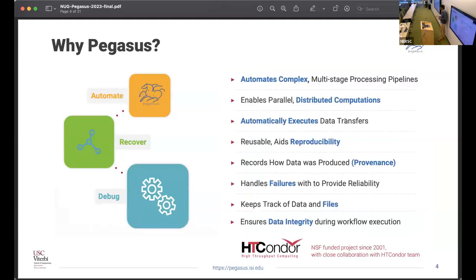Pegasus is a NSF-funded project since 2001, which is developed in close collaboration with the HT Condor team. It automates complex multi-stage processing pipelines. A key benefit of Pegasus is that it automatically does your data management, does all the data transfers that are required for your workflow. The descriptions in which you describe your workflows are reusable, which aids in reproducibility, we do record how your data was produced, and we have retries built in the system so that a job failure doesn't trigger a workflow failure without retries. And we ensure data integrity during workflow execution.